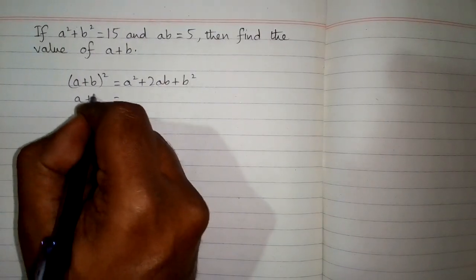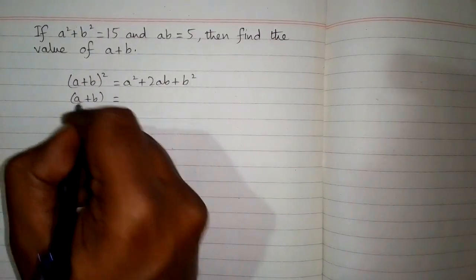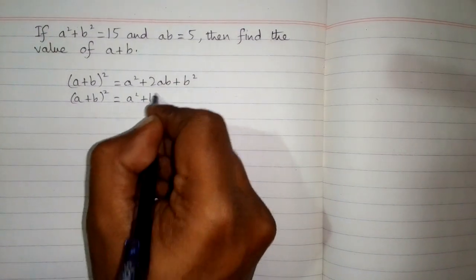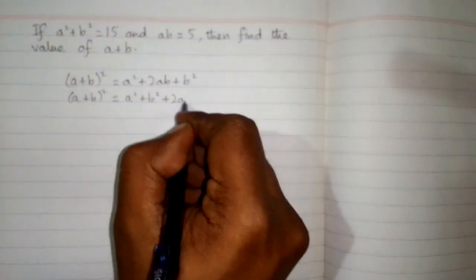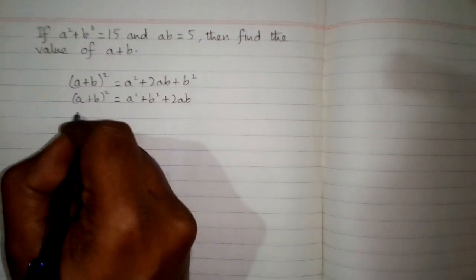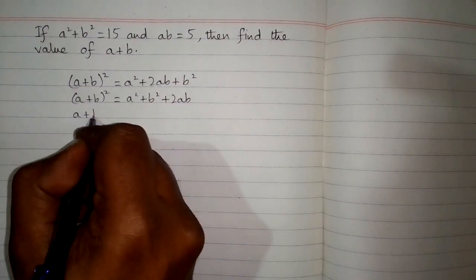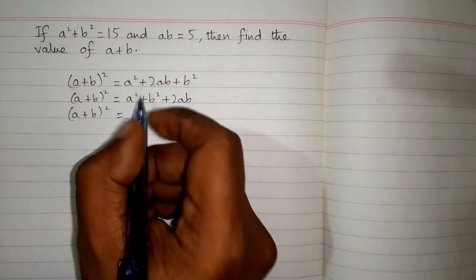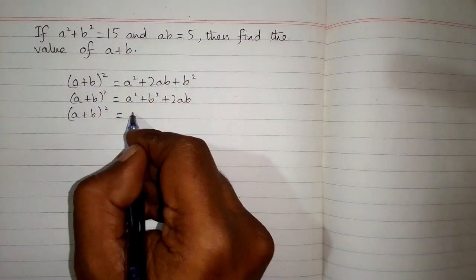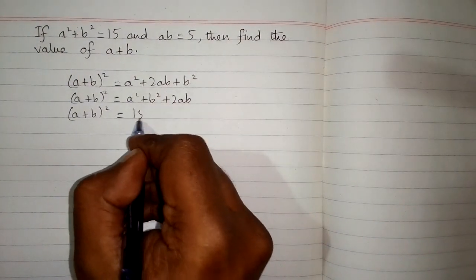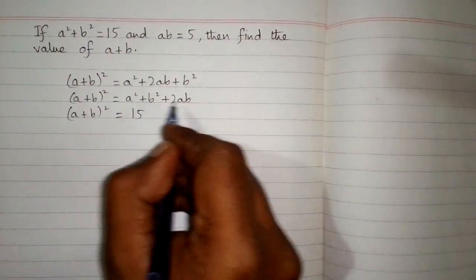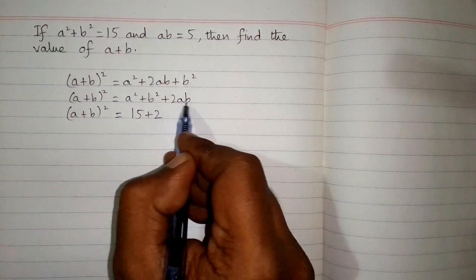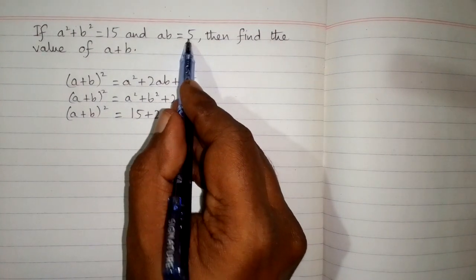This can be written as: a plus b whole square is equal to a squared plus b squared plus 2ab. Then we put the value of a squared plus b squared, which is 15, so we will put 15 in place of a squared plus b squared, then plus 2, and in place of ab we will put the value 5.